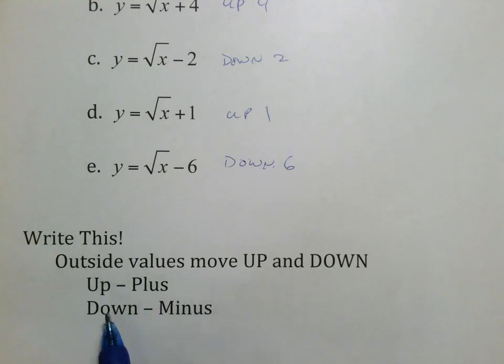Notice all these values were outside the radical and they moved either up or down. If it's plus, it moves up; minus moves down. You want to make sure you have this because you're going to need this for that large assignment I have waiting for you as soon as you finish this video. Outside moves up and down—plus being up, minus being down.